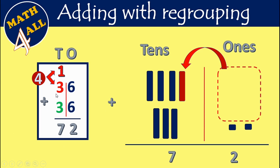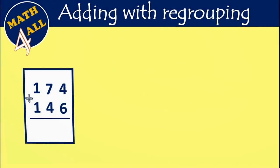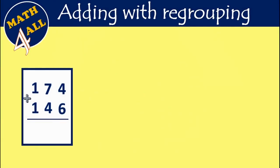4 plus 3: after 4 — 5, 6, 7. So write 7. Here we have 36 plus 36 equals 72.